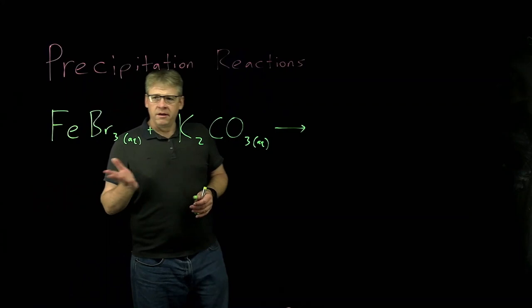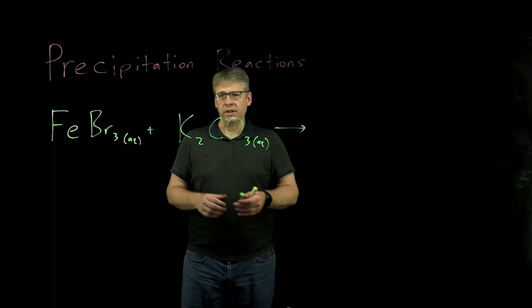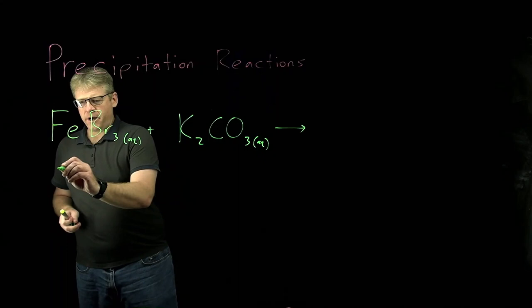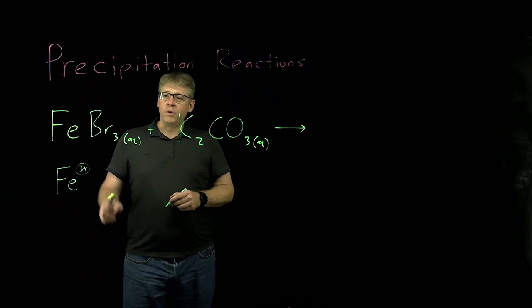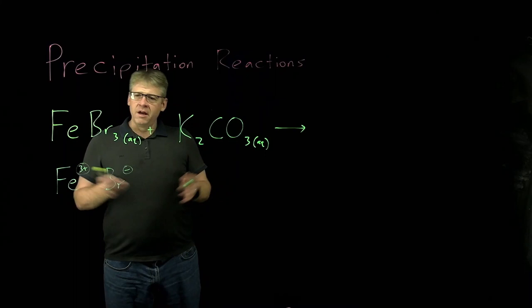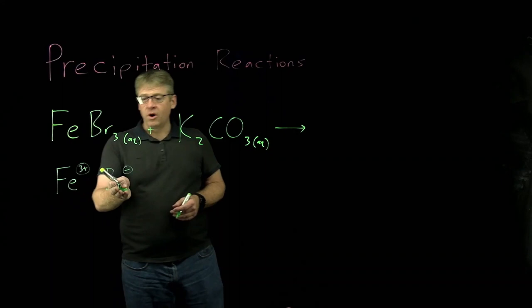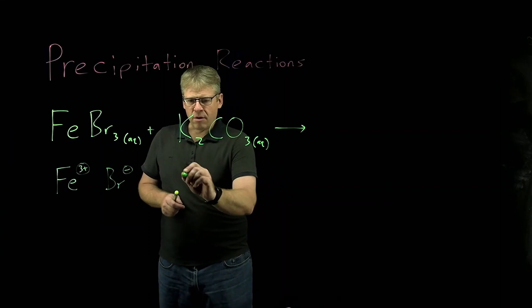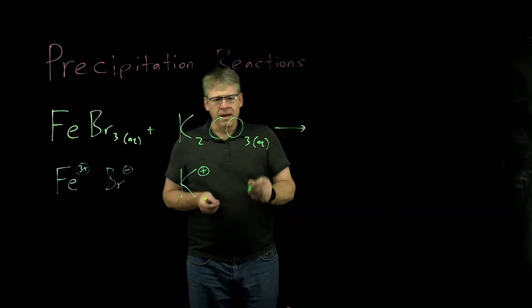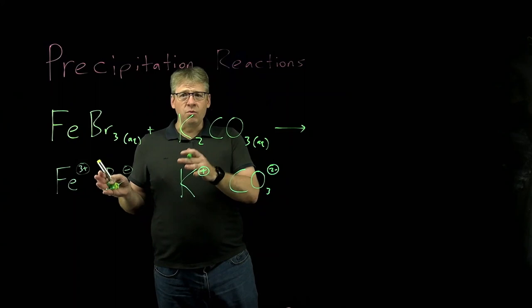Here we have our next example: iron-3-bromide solution mixed with potassium carbonate solution. Will this be a successful precipitation reaction? Looking at iron-3-bromide, the iron has a 3+ charge because Br as an anion typically has a 1- charge, and with three of them the iron must be 3+. Our cation is Fe3+ and our anion is Br-. Our next reactant, potassium carbonate, consists of a potassium cation K+ and a carbonate anion CO3 2-. We just want to identify what type of cation and anion each reactant has.